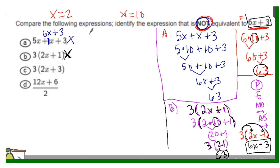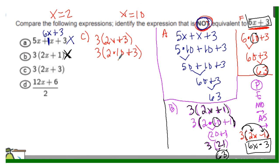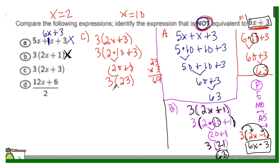Now let's look at option C. Option C says 3 times the sum of 2 times x and 3. Substituting 10 for x: 3 times open parentheses 2 times 10 plus 3 close parentheses. Evaluating the parentheses first using order of operations: 2 times 10 is 20, and 20 plus 3 is 23. Then I bring down the 3 and multiply: 3 times 23 gives me 69.